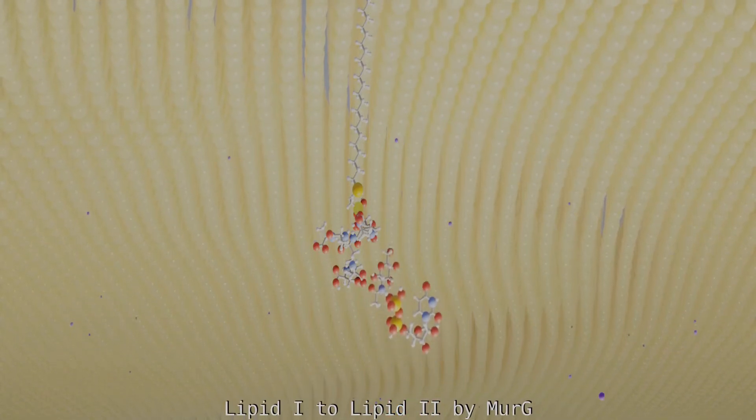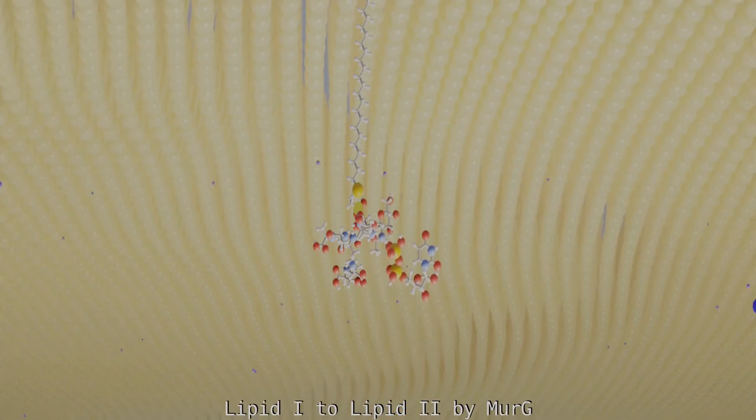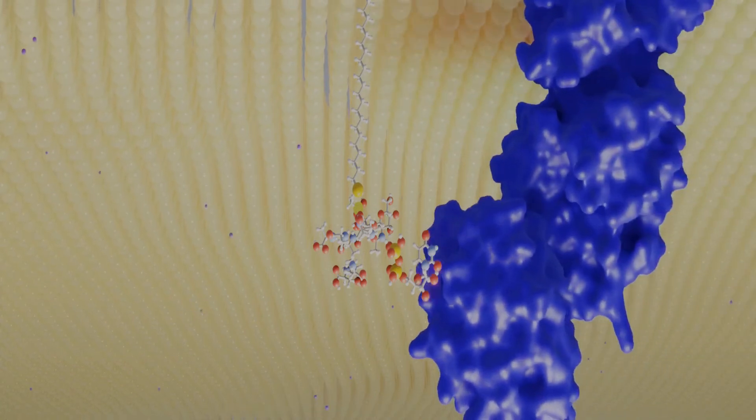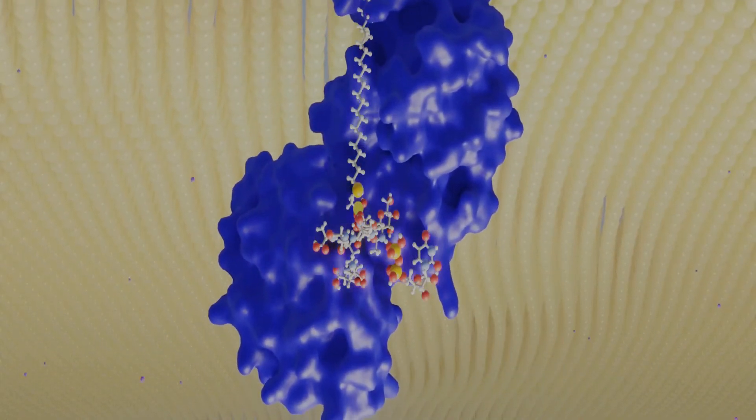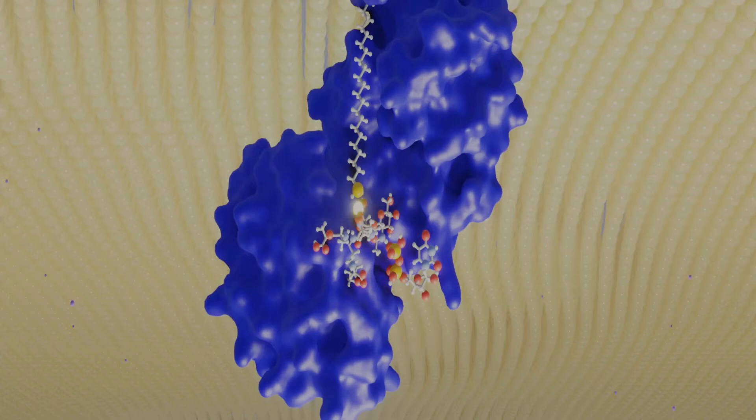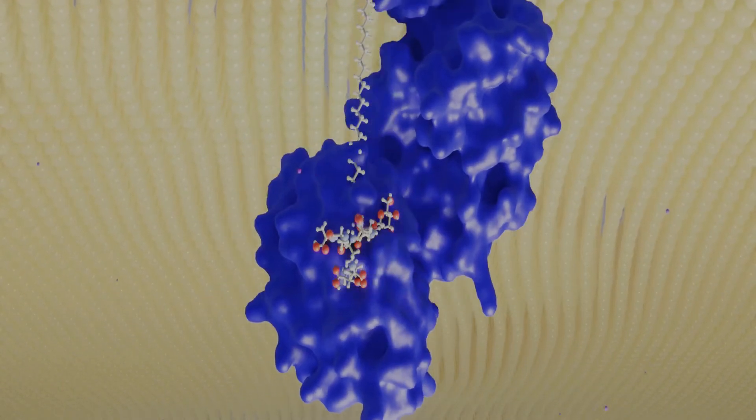In the next step, N-acetylglucosamine or glugnaq is attached to lipid 1. This step is catalyzed by the protein MRRYG which attaches the UDP-Glugnaq to lipid 1 by cleaving off uridine diphosphate, forming so-called lipid 2.